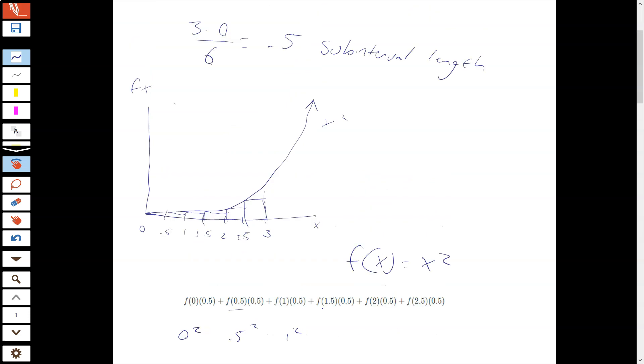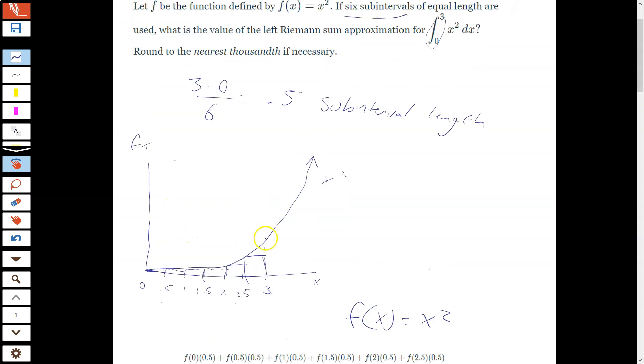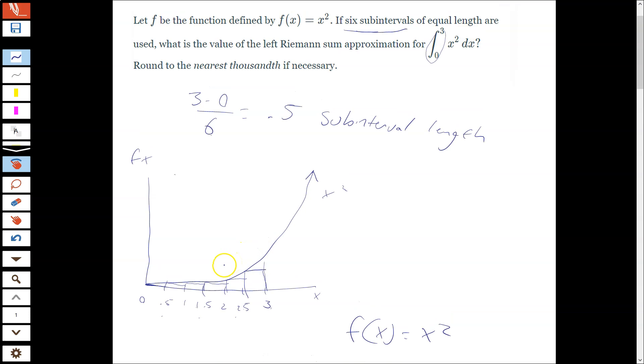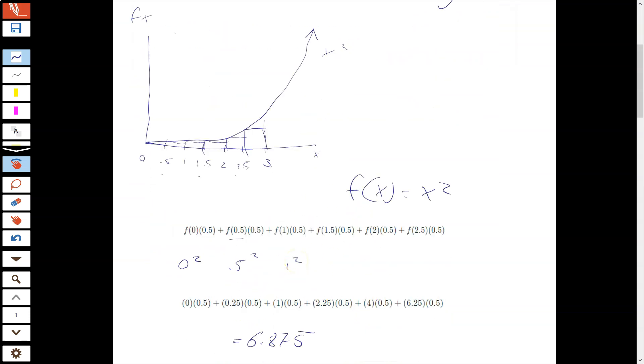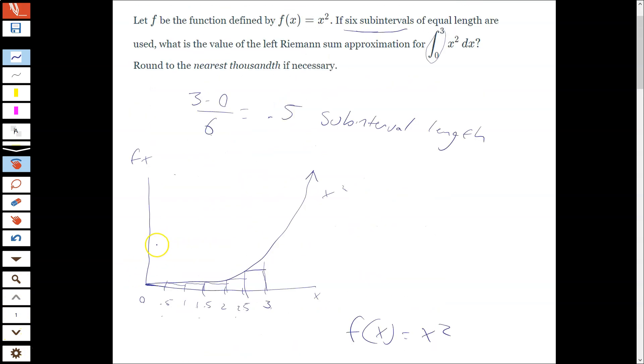So I would draw it first. The useful thing about drawing it is figuring out your subintervals. And that's the step we've added since the last one. In the last one, your subintervals and all the values were given to you. Here we have to find them. So drawing it, at least sketching it, is going to help you keep that straight. Make sure you capture this example in your notes before you move on.